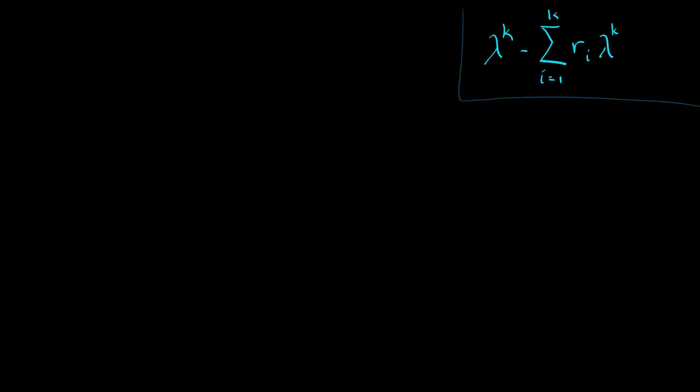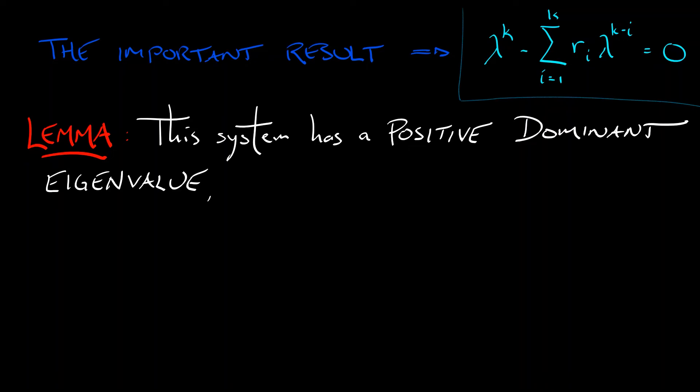Here is the important result, lemma. This system has a strictly positive dominant eigenvalue. Let's call that guy lambda star. And this has an eigenvector associated with it, whose entries are all strictly positive.